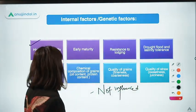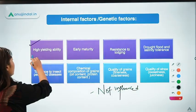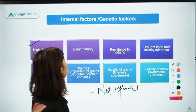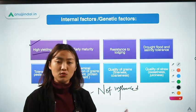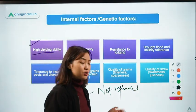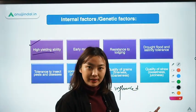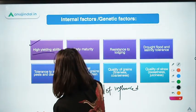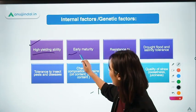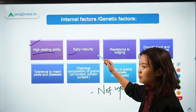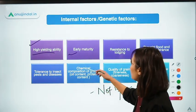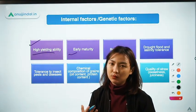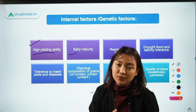Coming to the characteristics that genetic makeup can produce — they can give out high yield ability. The second character is early maturity of the plant, where it will flower early or maybe produce food early.